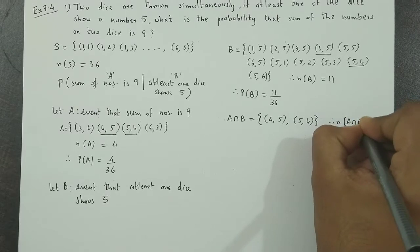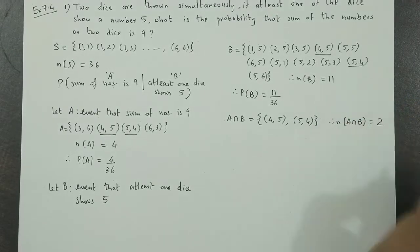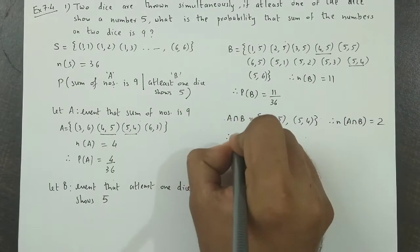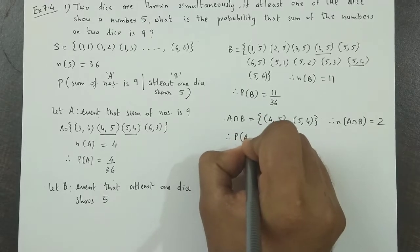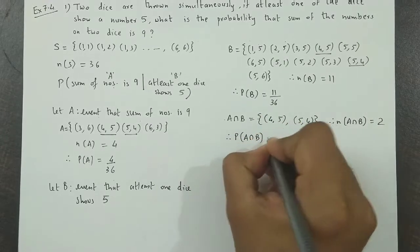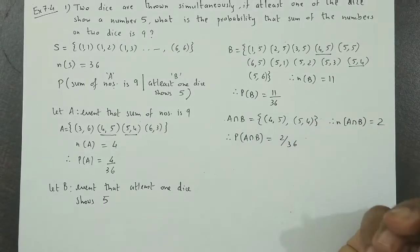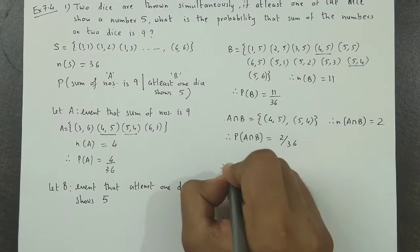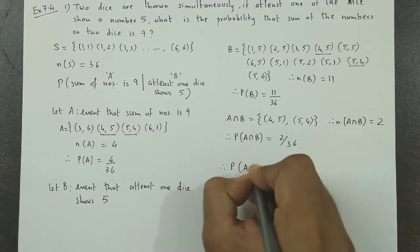n(A intersection B), its value is 2. So therefore, probability of A intersection B will be 2 by 36.